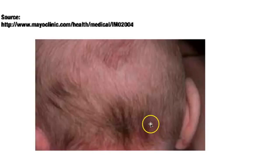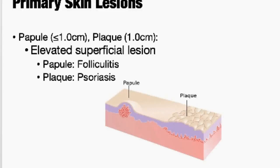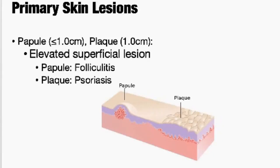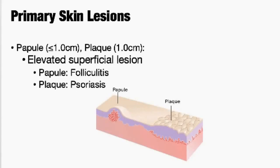This is a stork bite or salmon patch — flat, not raised at all. These usually disappear by about one year of age. If you can feel a skin lesion, it's probably a papule or a plaque — these are elevated but still superficial lesions. A papule is something like folliculitis — a small, red, solid, elevated skin lesion, usually smaller. Plaques are larger elevated skin lesions that can be flat, pointed, or rounded. Those include things like patches associated with eczema, or more commonly psoriasis, which has a lot of plaques.